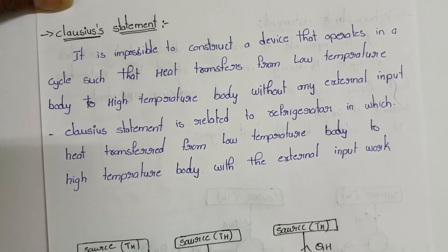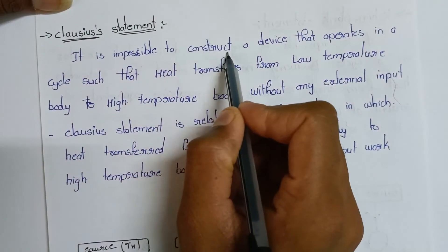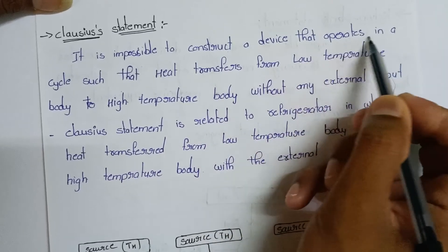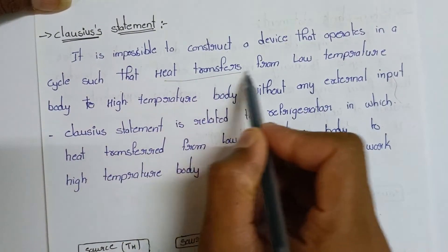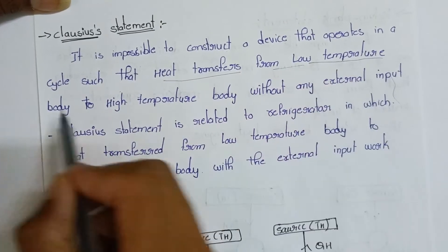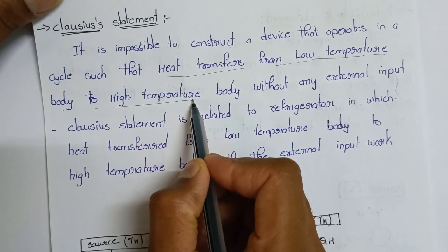Clausius statement: It is impossible to construct a device that operates in a cycle such that heat transfers from low temperature body to high temperature body without external input.